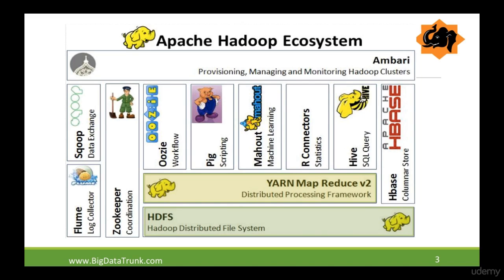These two blocks — HDFS and MapReduce — play an important role in defining Hadoop at the storage and processing layer. The rest of the blocks were created later and helped these two be more successful. Before we move to the next block, we need to understand that Hadoop does not create data. Usually data has been created in some other system and then brought into Hadoop.